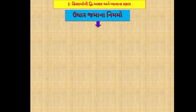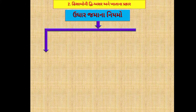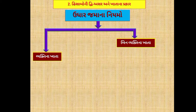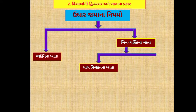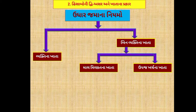ખાતાના મુખ્યત્વે બે પ્રકાર પડે છે: એક, વ્યક્તિના ખાતા અને નંબર બે, બિન-વ્યક્તિ ખાતા. આ બિન-વ્યક્તિ ખાતાના પણ બે પેટા પ્રકાર પડે છે - નંબર એક, માલ-મિલકતના ખાતા અને નંબર બે, ઉપજ-ખર્ચના ખાતા.